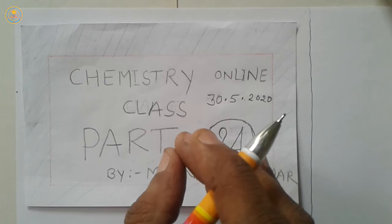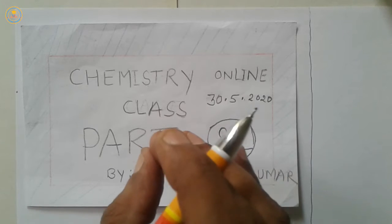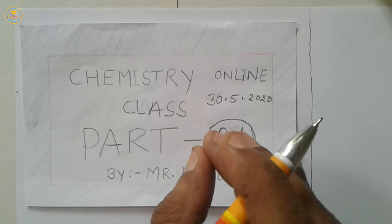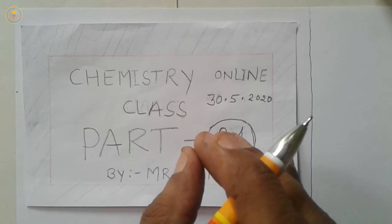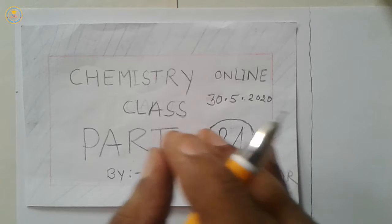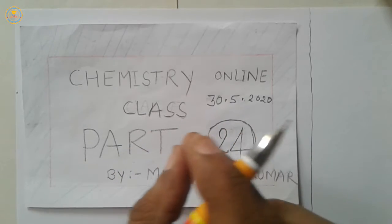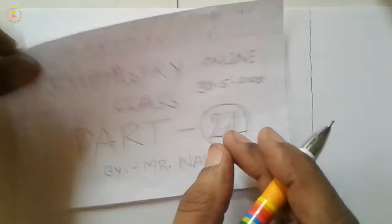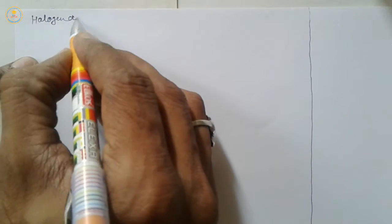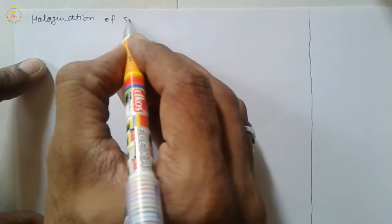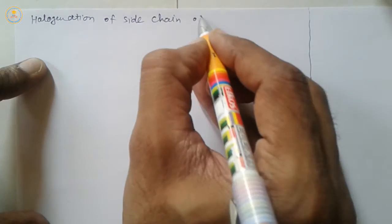Halogenation of the benzene ring is an electrophilic substitution reaction. We read the reaction mechanism of halogenation of the benzene ring. In today's class, we shall read halogenation of the side chain of the benzene ring.